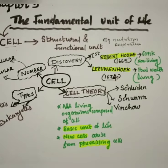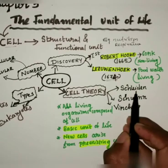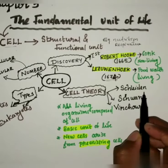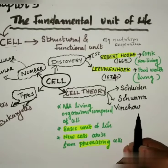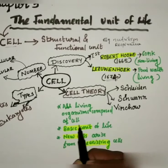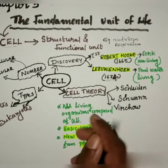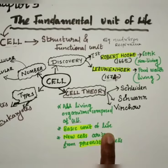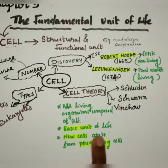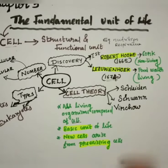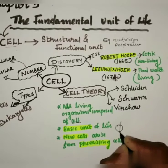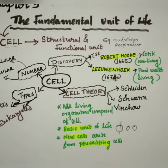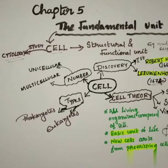We will be discussing about cell theory. Cell theory was proposed by three scientists — Schleiden, Schwann, and Virchow — suggesting that all living organisms, meaning plants and animals, are composed of cells. The basic unit of life is the cell, and new cells arise only from pre-existing cells. A cell will not arise spontaneously. If one cell is there, it will divide and two new cells will form. Cells may vary in shape and size according to their function.